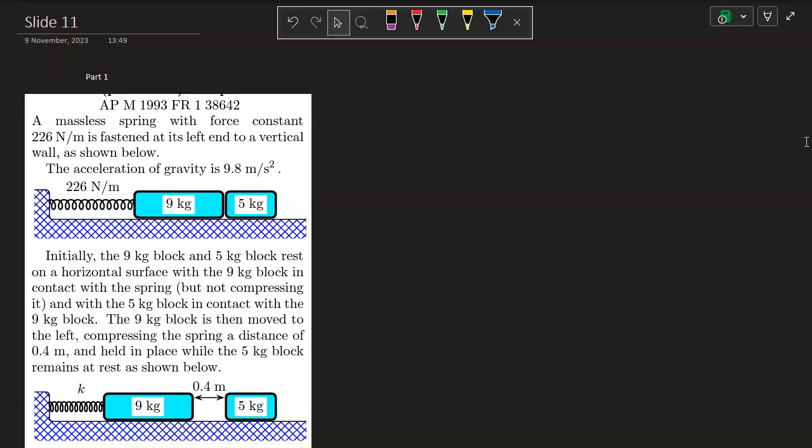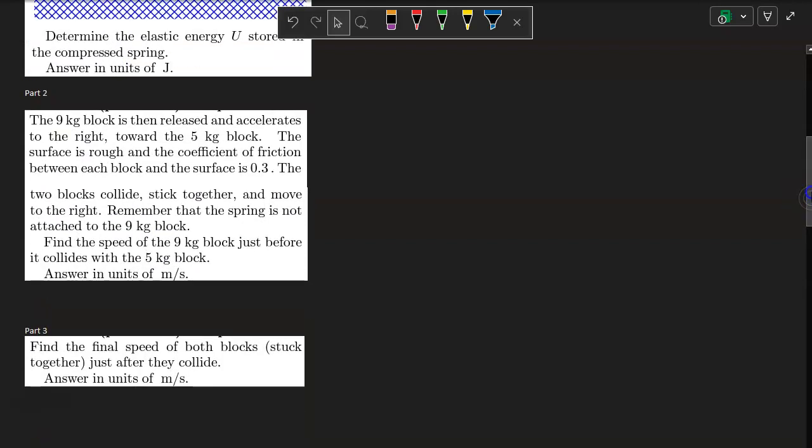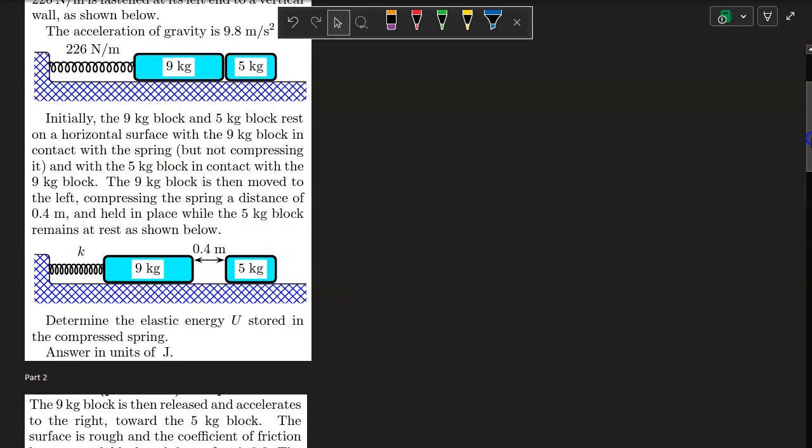Initially, the 9 kilogram and the 5 kilogram block rest on a horizontal surface with the 9 kilogram block in contact with the spring, but it's not compressing it, and the 5 kilogram block in contact with the 9 kilogram block. The 9 kilogram block is then moved to the left, compressing the spring a distance of 0.4 meters and held in place while the 5 kilogram block remains at rest as shown below.